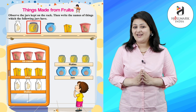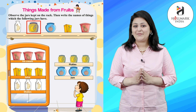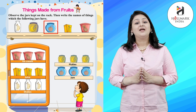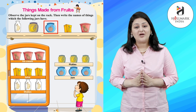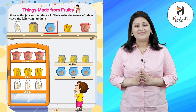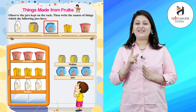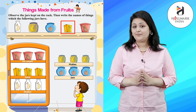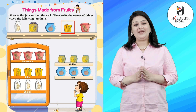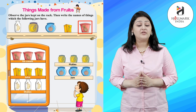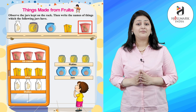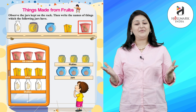The second jar has mango. The third jar has apple. The fourth jar has grapes. The fifth jar has pineapple.